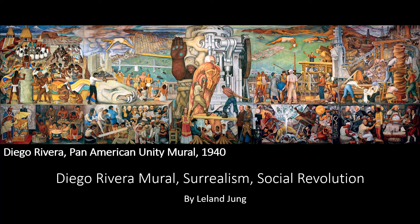This concludes our fourth video. In this video, we looked at the yin-yang symbol, a symbol used in Chinese philosophy. We played detective and tried to find out if Rivera used the symbol as a secret symbol for the Surrealism Movement and Social Revolution. In our next video, we'll be looking at the tree of life. Stay tuned. This is Leland Jung, a student Diego Rivera docent at City College of San Francisco.